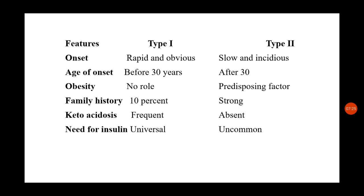Regarding need for insulin: in Type 1 (IDDM), insulin is universally given as treatment. In Type 2, treatment is started with oral hypoglycemic agents and insulin is given only in difficult situations. These are the key differences between Type 1 and Type 2 diabetes. Even though the pathophysiology may be similar, the patient presentation and details of how it develops in a child are different.